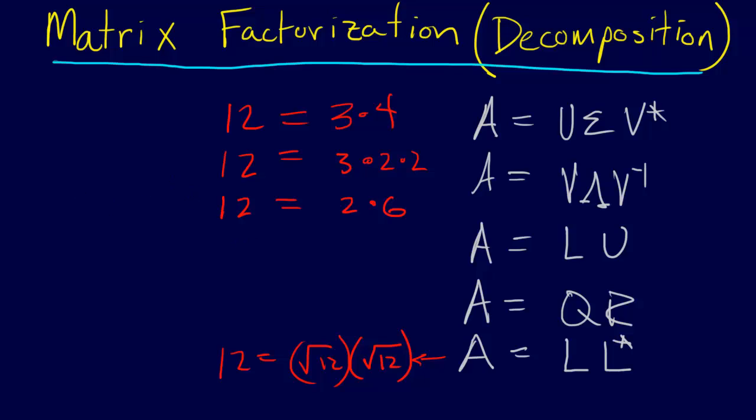And one interesting thing to note is actually the inverse of a matrix is a decomposition. If we have the identity matrix I, we can decompose that into the parts A, A inverse. And you see, this is a decomposition of the identity matrix, because A A inverse by definition is equal to the identity matrix. This is a key, key concept in all of linear algebra.